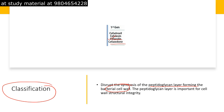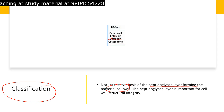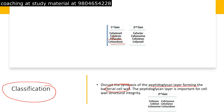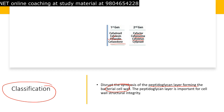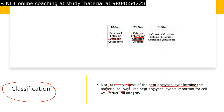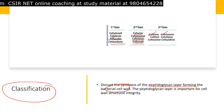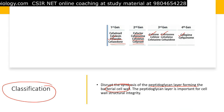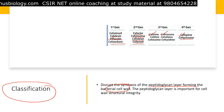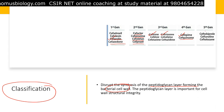Second generation cephalosporins include cefaclor, cefuroxime, cefotetan, and cefroxil. Third generation cephalosporins include cefixime and ceftriaxone — both very common — among others. Fourth generation includes cefepime and cefpirome. The fifth generation includes ceftobiprol, ceftaroline, and ceftolozane.